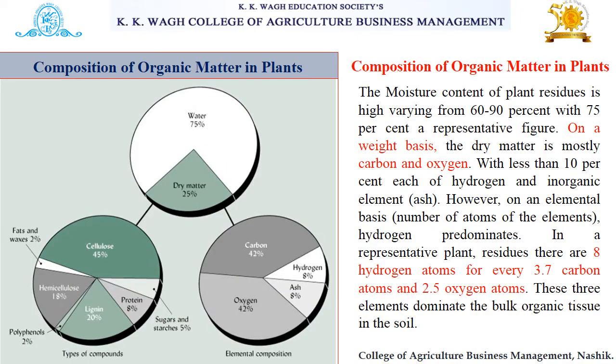In this diagram we can see the composition of organic matter in plants. The water percentage in organic matter is about 75% and dry matter is about 25%. In terms of elemental composition, carbon is about 42%, hydrogen and ash about 8%, and oxygen about 42%. Different compounds include cellulose 45%, fats and waxes with polyphenols about 22%, hemicellulose 18%, lignin 20%, protein about 8%, and sugars and starches about 5%.